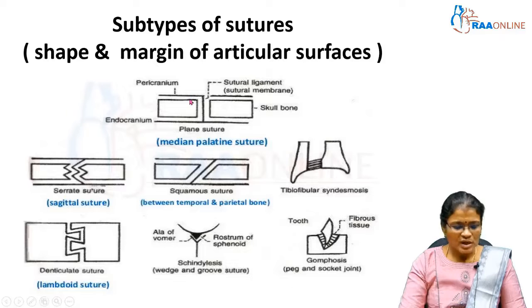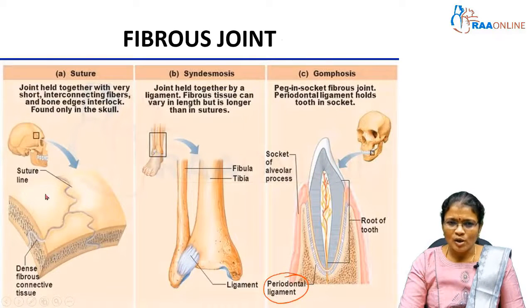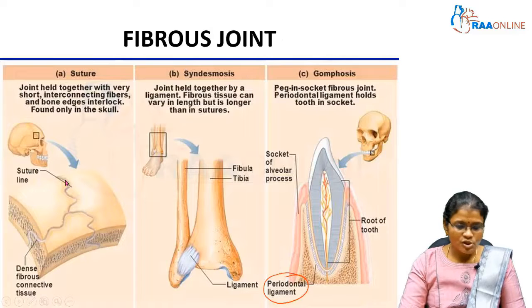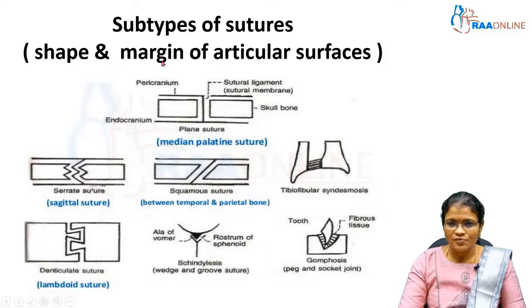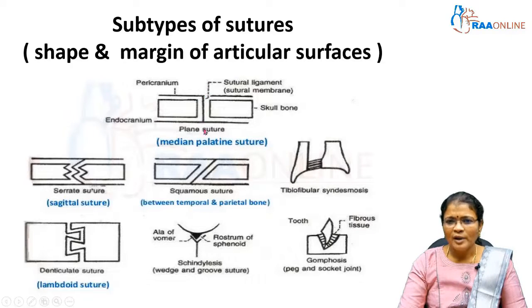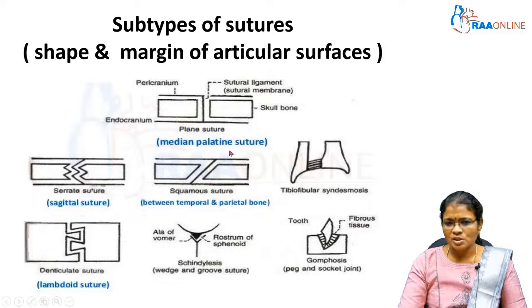Coming to the subtypes of sutures: sutures are classified based on the shape and margin of articular surfaces. If the margins are plane, it is called a plane suture. If the margins are serrated, it is a serrate suture. If the margins are beveled and overlapping, it is a squamous suture. If the margins have tooth-like projections, it is called a denticulate suture.